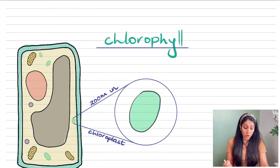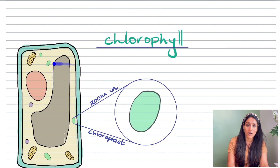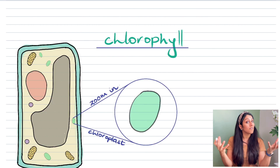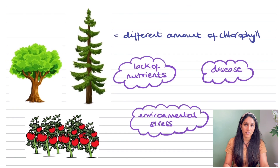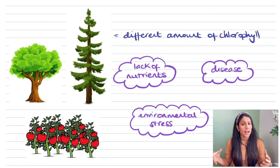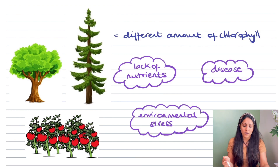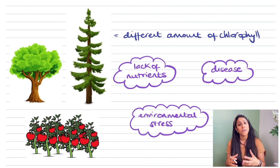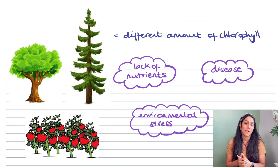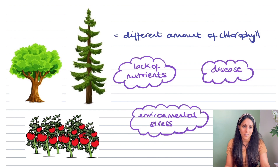Chlorophyll is the pigment that makes the plant green and it's found in the chloroplasts, which can be found in your cells — for example in the leaves. Different plants have different levels of chlorophyll from a genetic perspective, but other factors can also affect the amount of chlorophyll in a plant. This could be a lack of nutrients, diseases — plants get diseases just like us — or environmental stress. This affects the chloroplasts, and if chlorophyll levels are reduced it decreases the rate of photosynthesis.